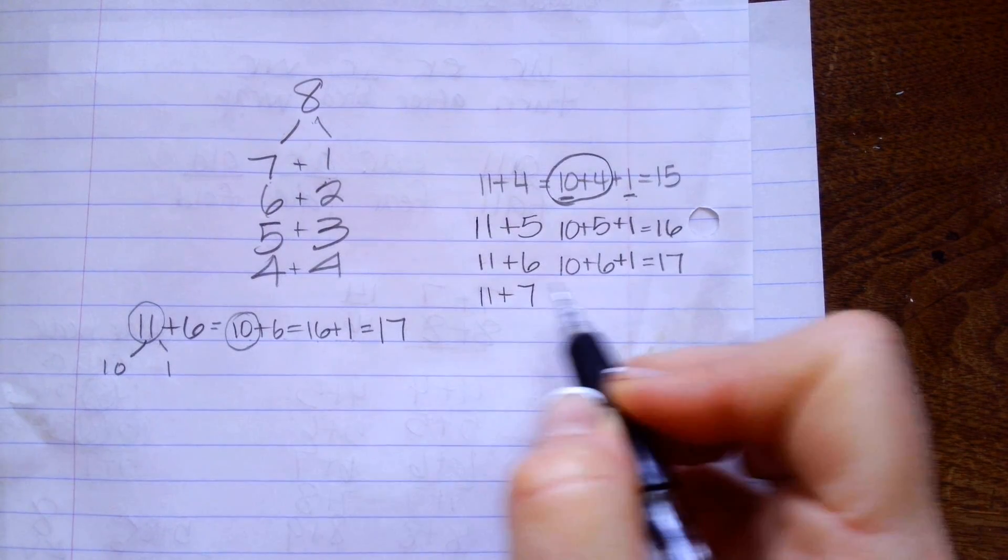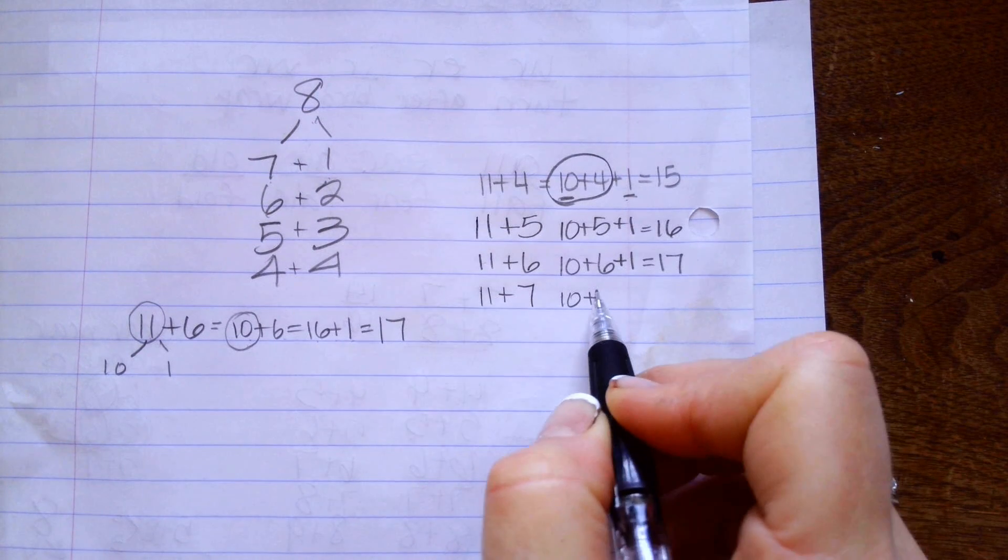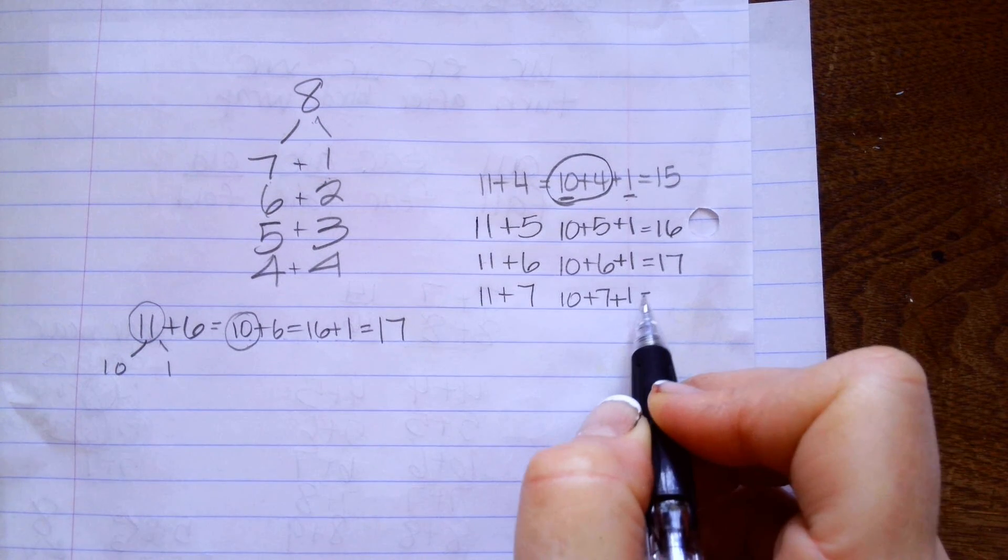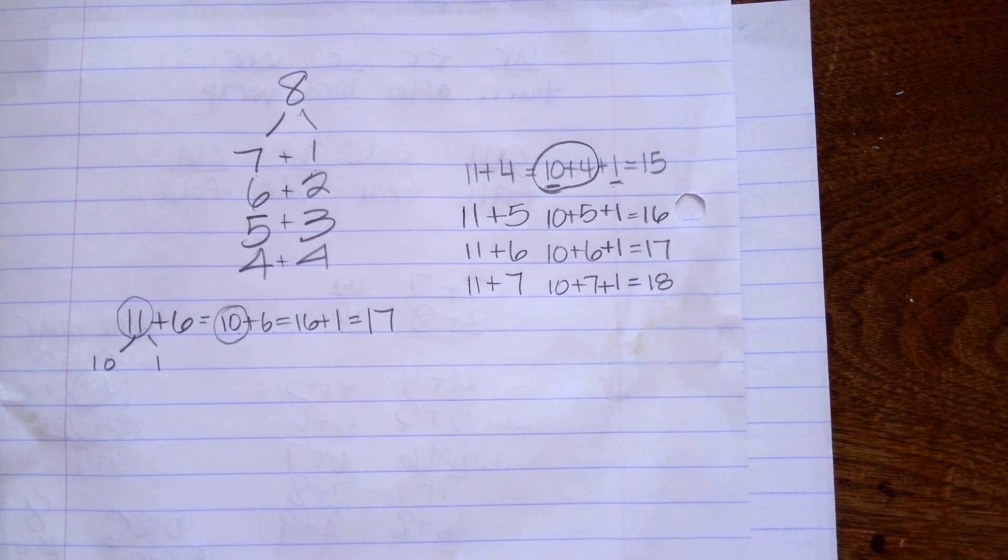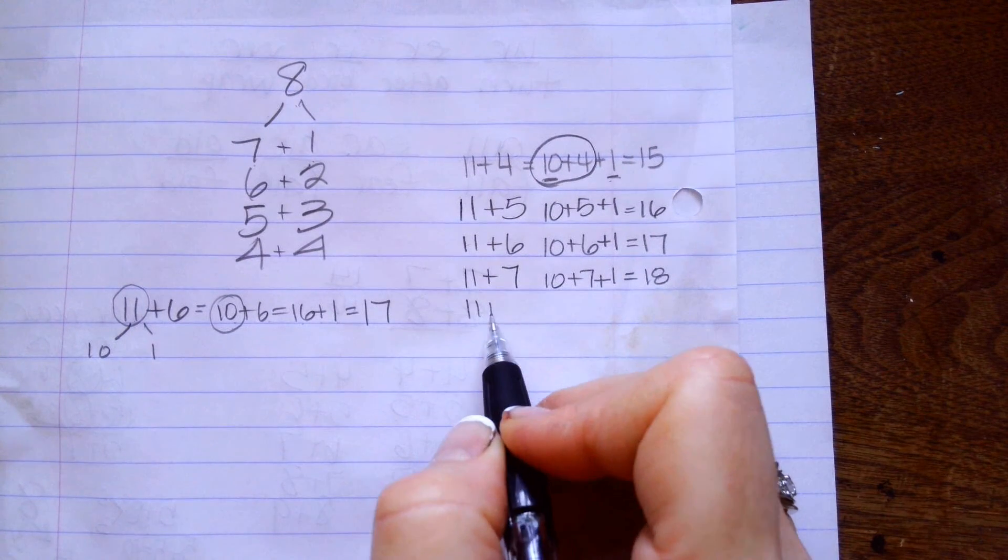11 plus 7. I'm going to do 10 plus 7 is 17 plus 1 is 18. 11 plus 8.